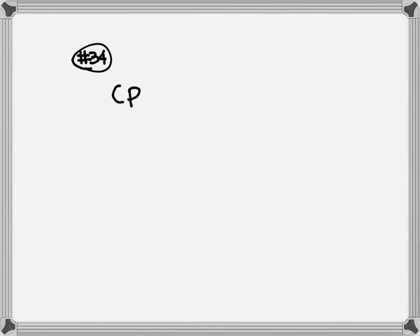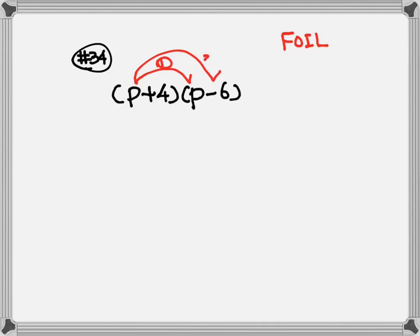Now let's look at number 34. Number 34, we have p plus 4 times p minus 6. For this section, we are going to use the FOIL method. With the FOIL method, there are 4 steps. Each step, you multiply 2 numbers.